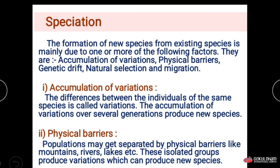Next is speciation. Speciation is the formation of new species from existing species, mainly due to the following factors: accumulation of variation, physical barrier, genetic drift, natural selection, and migration.